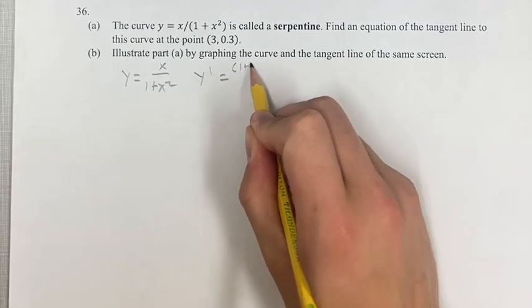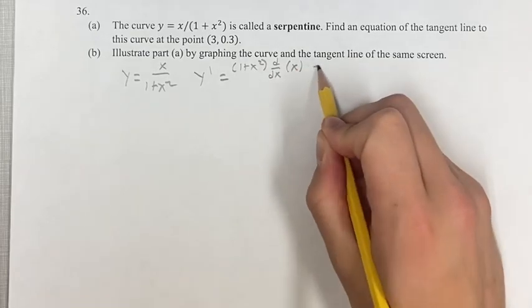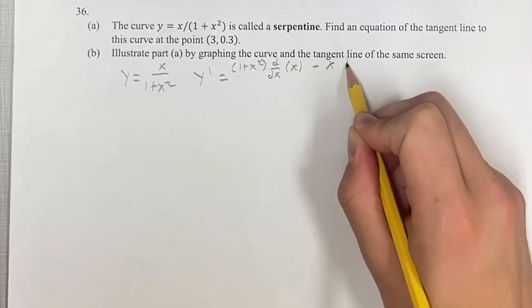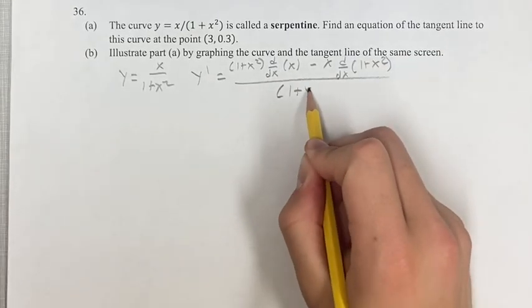The quotient rule is going to involve the denominator times the derivative of the numerator minus the numerator times the derivative of the denominator. This is going to be over the denominator squared.